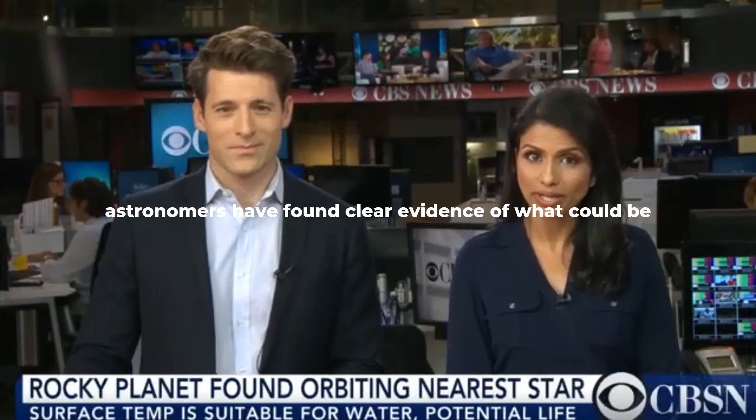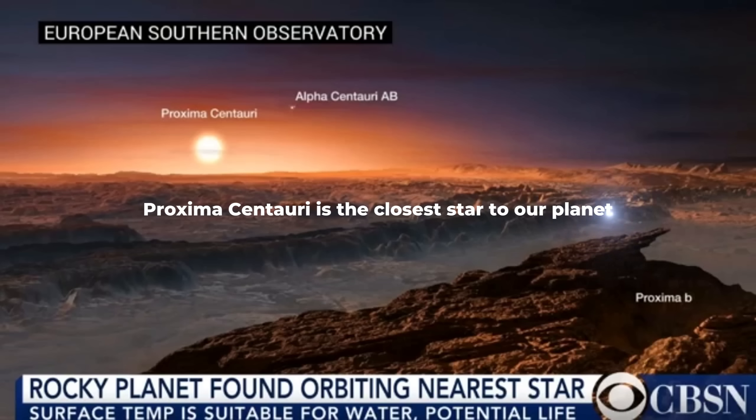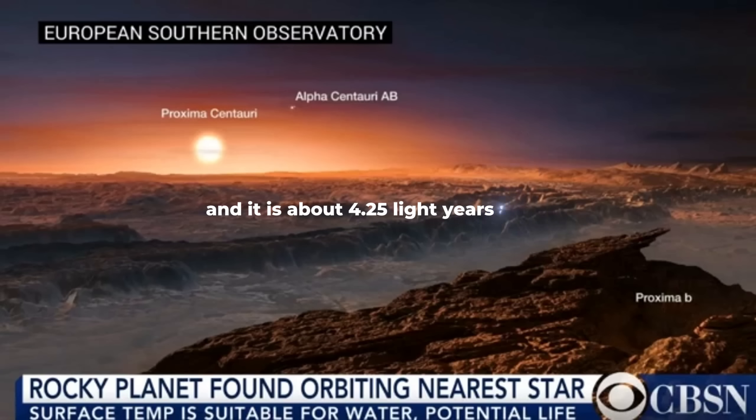Astronomers have found clear evidence of what could be an Earth 2.0. This artist's rendering shows the rocky planet identified as Proxima B orbiting the Proxima Centauri star. Proxima Centauri is the closest star to our planet apart from the sun, and it is about 4.25 light years away.